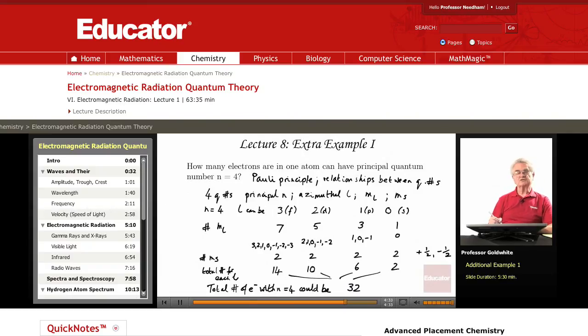Of those 32 electrons, 14 would be f-type with l equals 3, 10 would be d-type with l equals 2, 6 would be p-type with l equals 1, and 2 would be s-type with l equals 0.